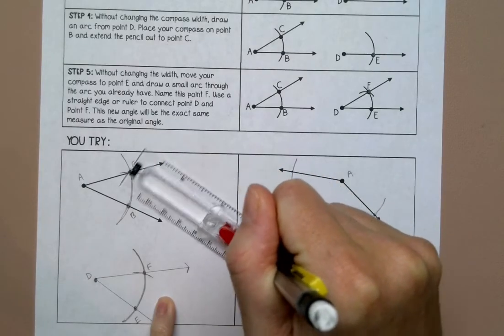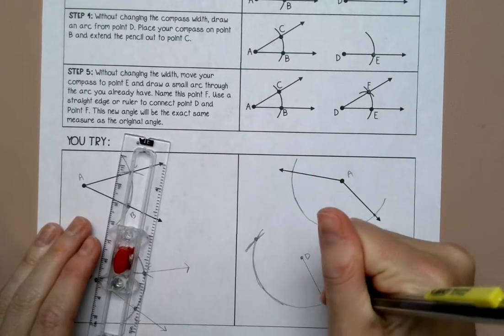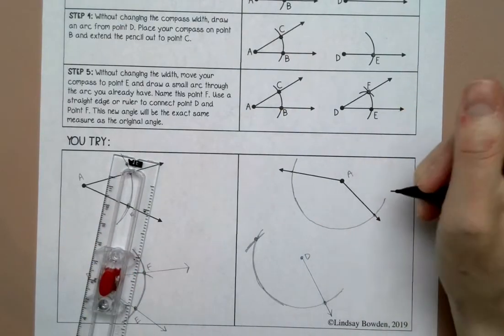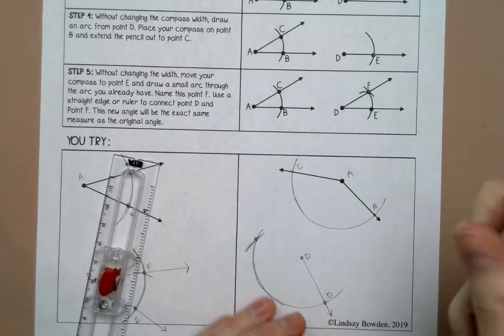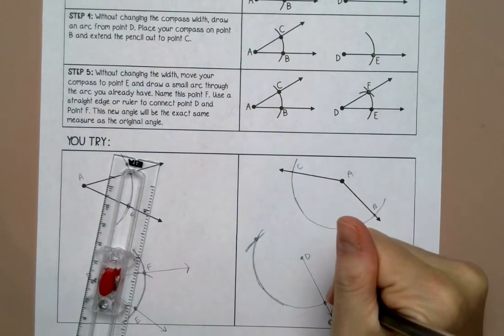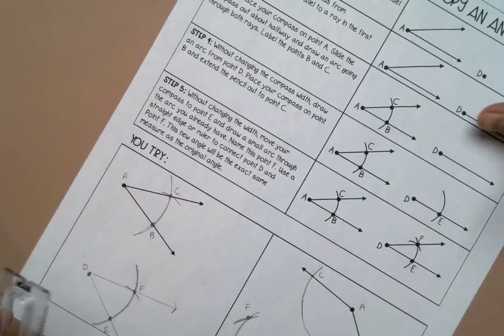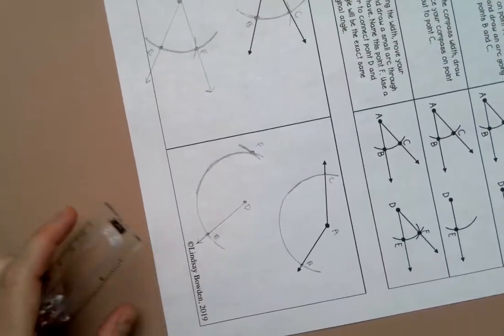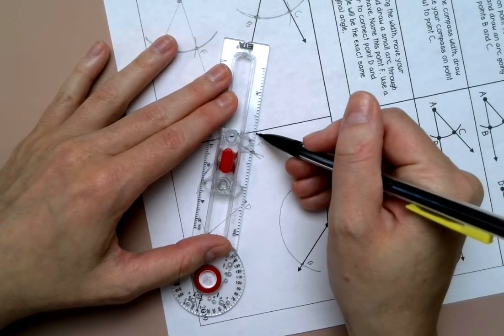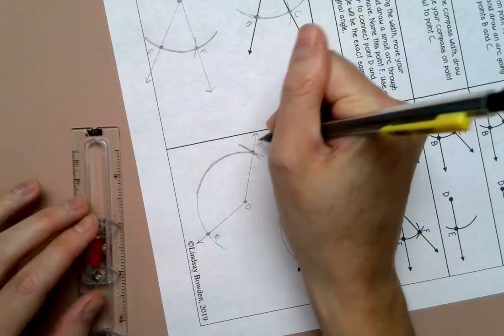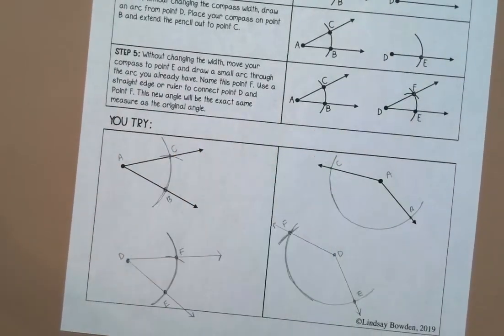I'm going to call this, let's see, let's label our points. So this would be B and C, this would be, we already have D, so E and F. And I'm going to draw a ray through D and F, and that is how you copy an angle.